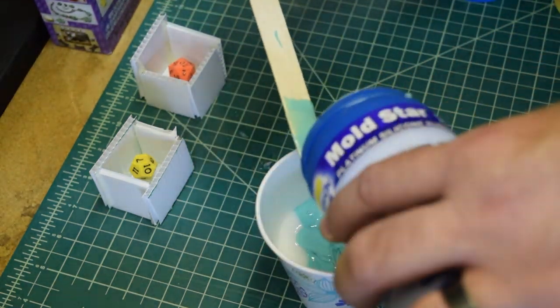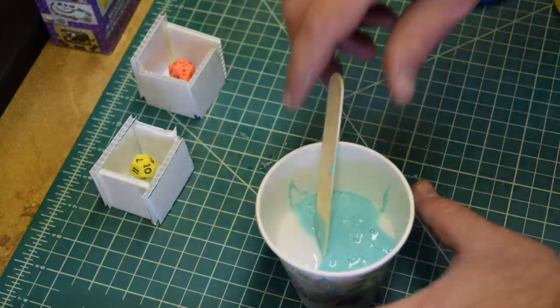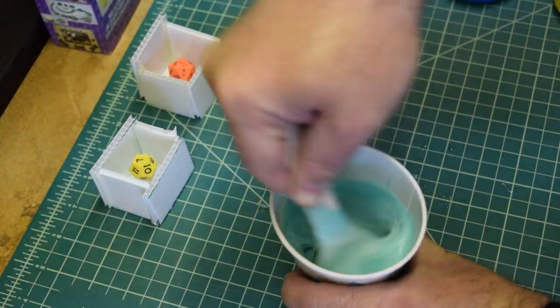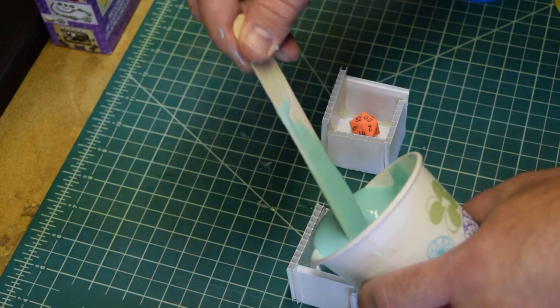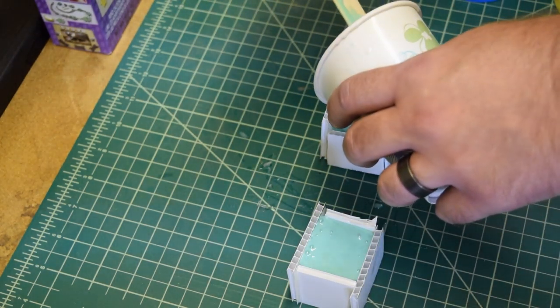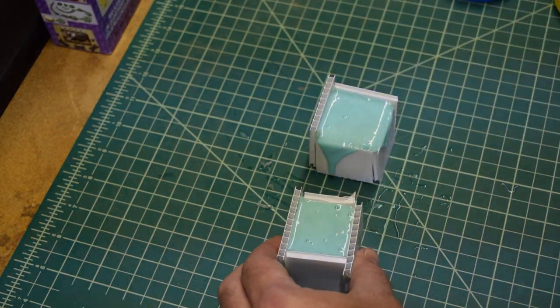Mixing the silicone and resin, it's important to introduce as few bubbles as possible. Gas from these bubbles may cause voids or narrow channels in the mold as well as the cast part. Now the silicone is poured and allowed to cure.